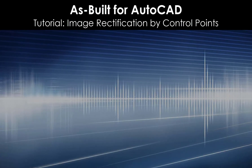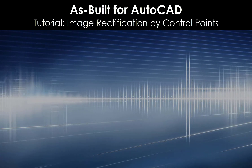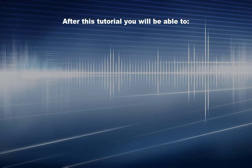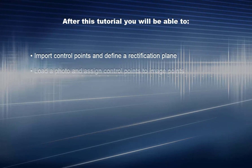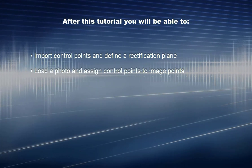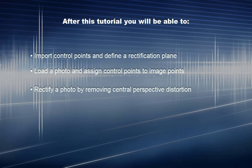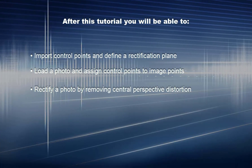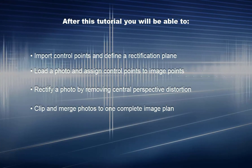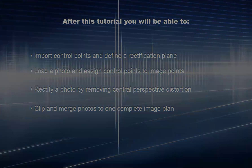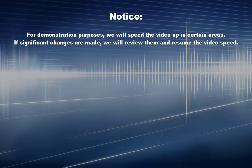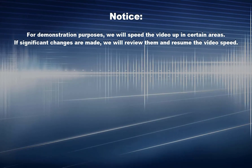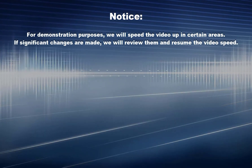As-Built for AutoCAD tutorial: image rectification by control points. After this tutorial you will be able to import control points and define a rectification plane, load a photo and assign control points to image points, rectify a photo by removing central perspective distortion, and clip and merge photos to one complete image plan. Note: for demonstration purposes we will speed the video up in certain areas; if significant changes are made we will review them and resume.